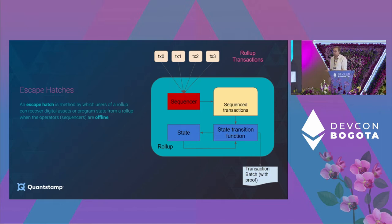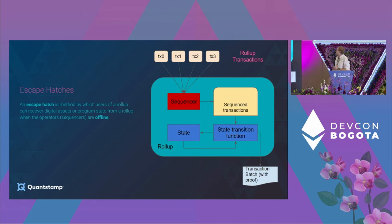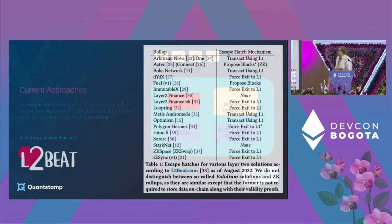Obviously there's some sort of caveat. Some things probably can't fail and always work with an escape hatch. If you have a bug in your smart contract, maybe no escape hatch functionality is going to work because maybe that's what's broken — but we'll talk about that.